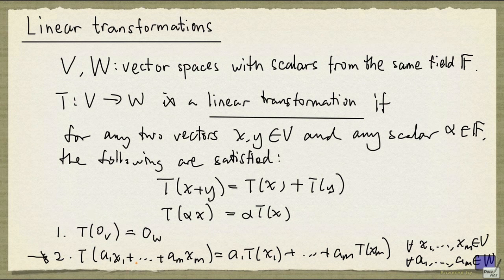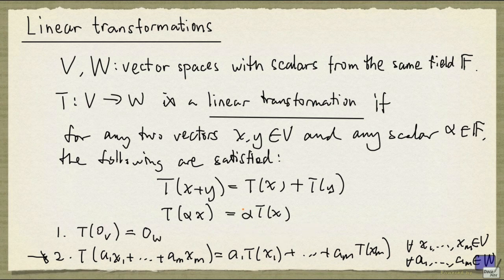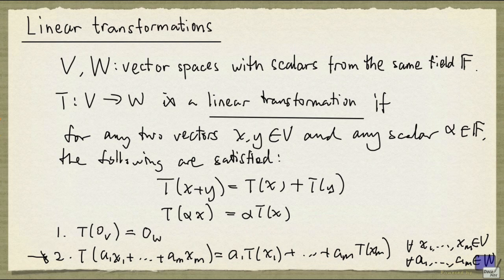If x1 up to xm happen to form a basis for the vector space V, and if you know the images of these basis elements, then you can find out where T maps any element of V to. So let's look at an example.